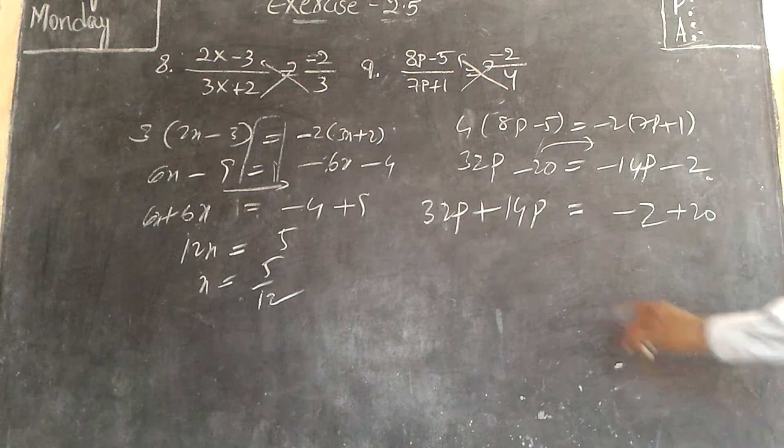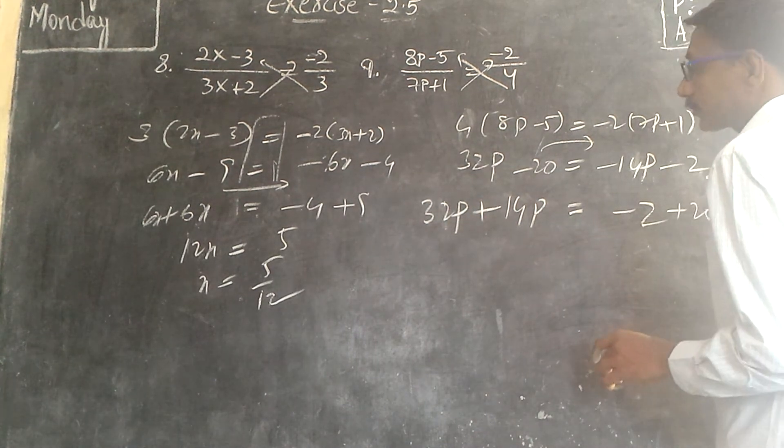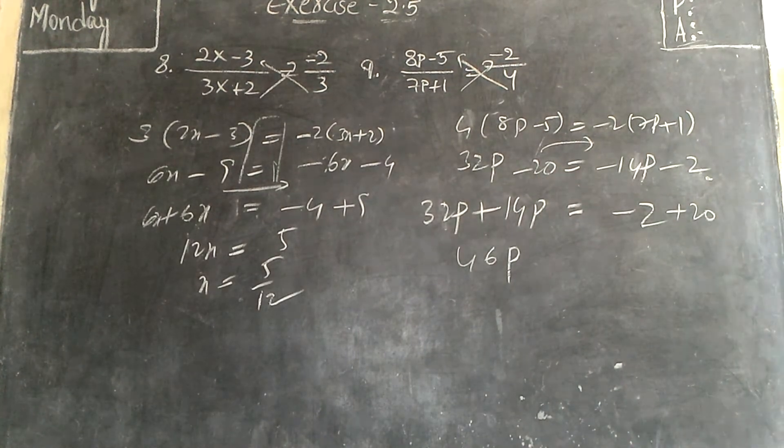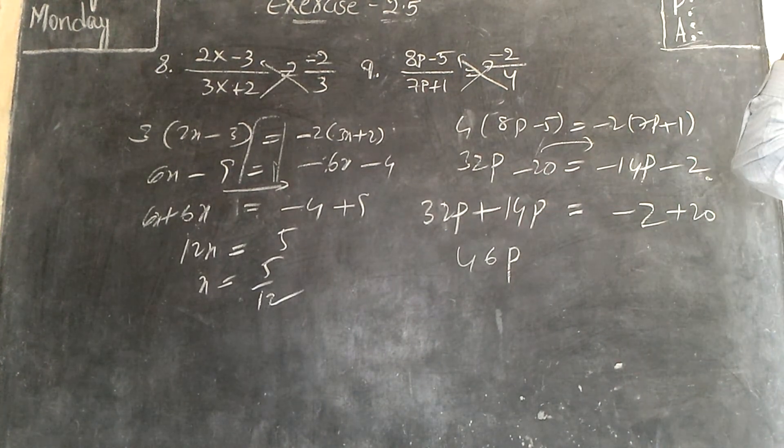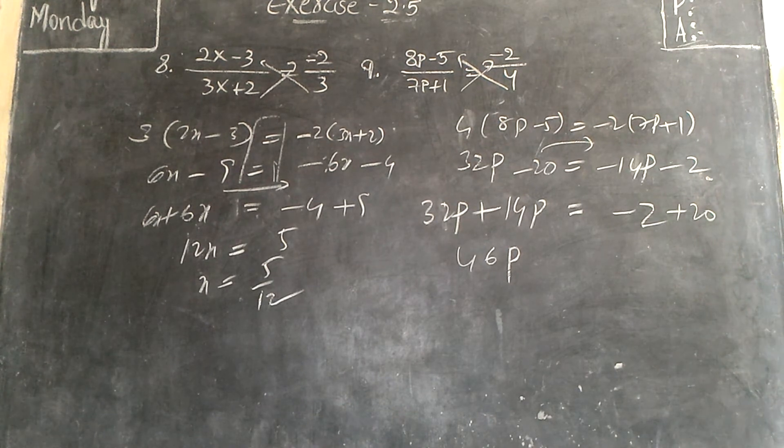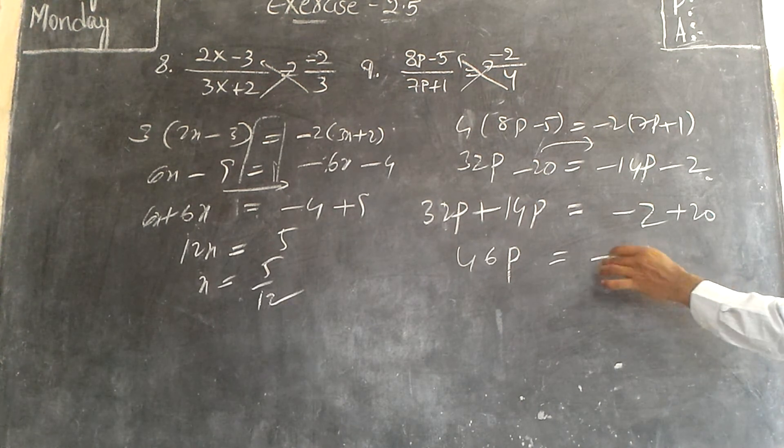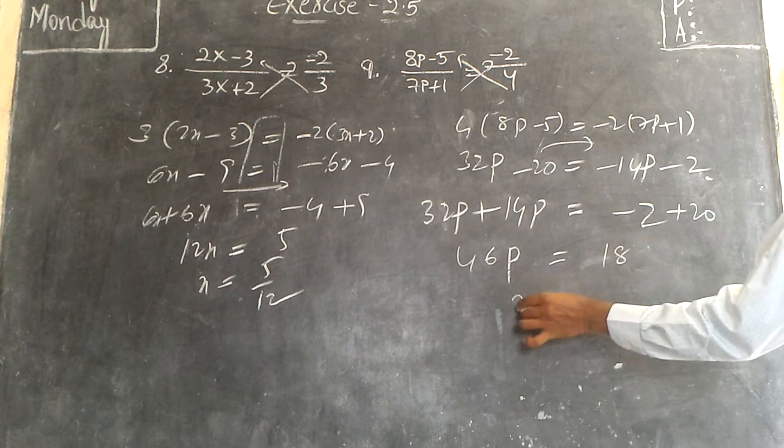This is how much? 46p. 32p plus 14p is 46p. This is equals to how much? Plus 18. Okay, then p is equals to 18 by 46.